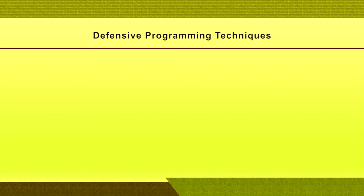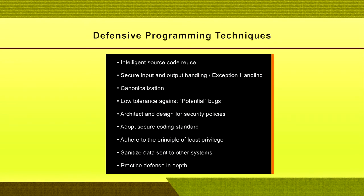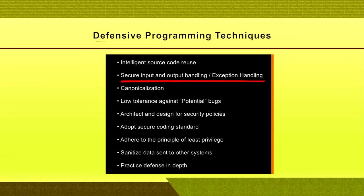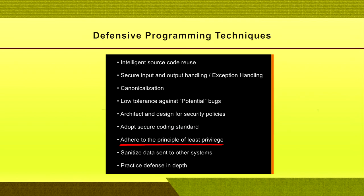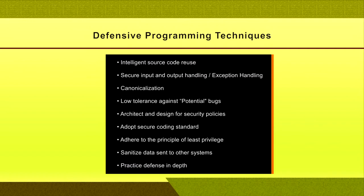There are many defensive programming techniques. Some prominent ones include: intelligent source code reuse, secure input and output handling, canonicalization, low tolerance against potential bugs, architect and design for security policies, adopt secure coding standards, adhere to the principle of least privilege, sanitize data sent to other systems, and practice defense in depth.